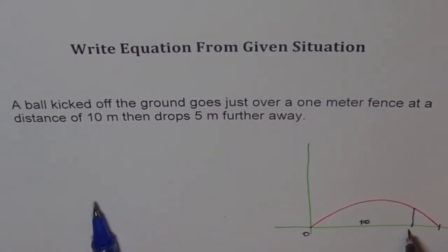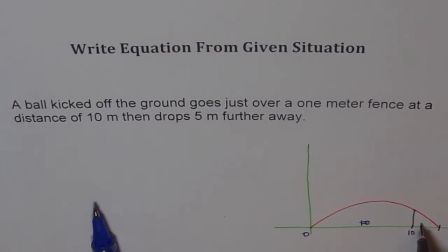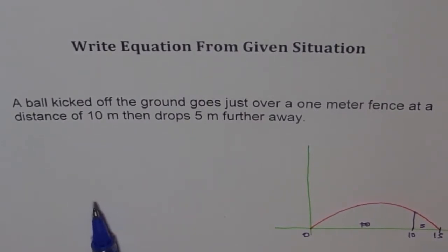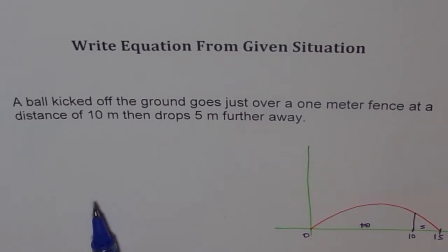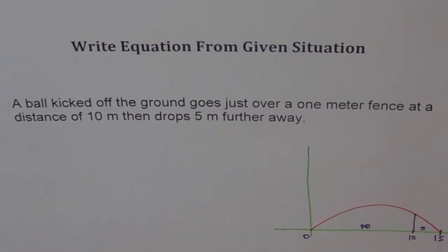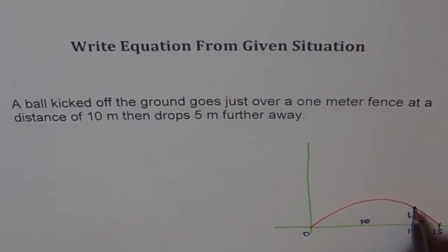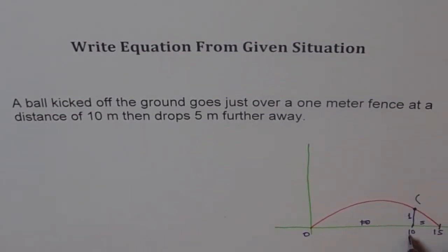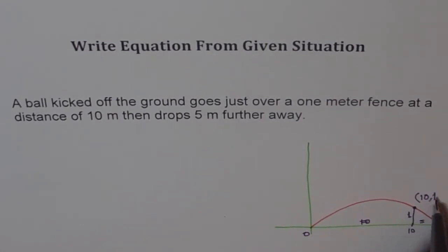Then let me write 10 here, and this is 5 meters away. So I want to write 10 and 5, and this is 5 meters away so I can write this as 5. Now I think the problem becomes much, much simpler than what it sounded. So I want to write one simple statement. A ball kicked off the ground goes just over a 1 meter fence. So that means the height of this fence is 1 meter. So let me write this height is 1 meter. That means this coordinate is what? At x equals to 10, we have height of 1 meter.